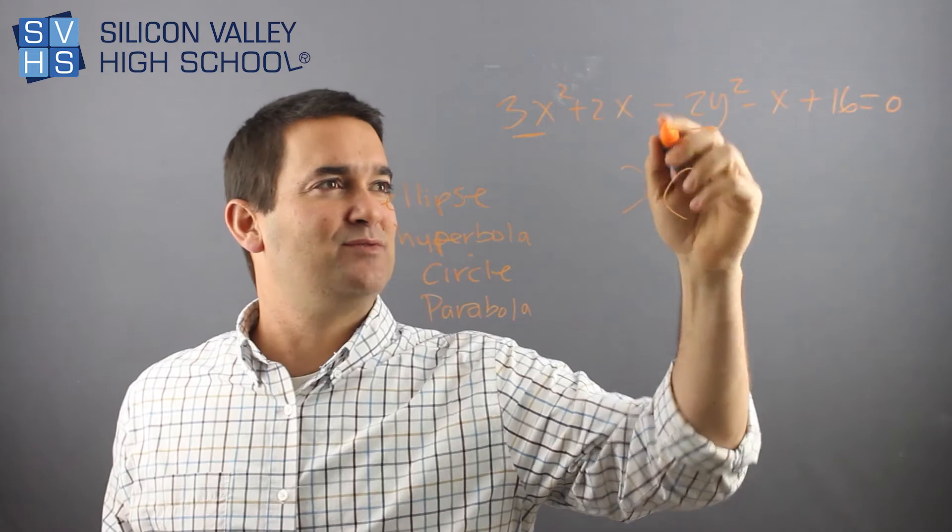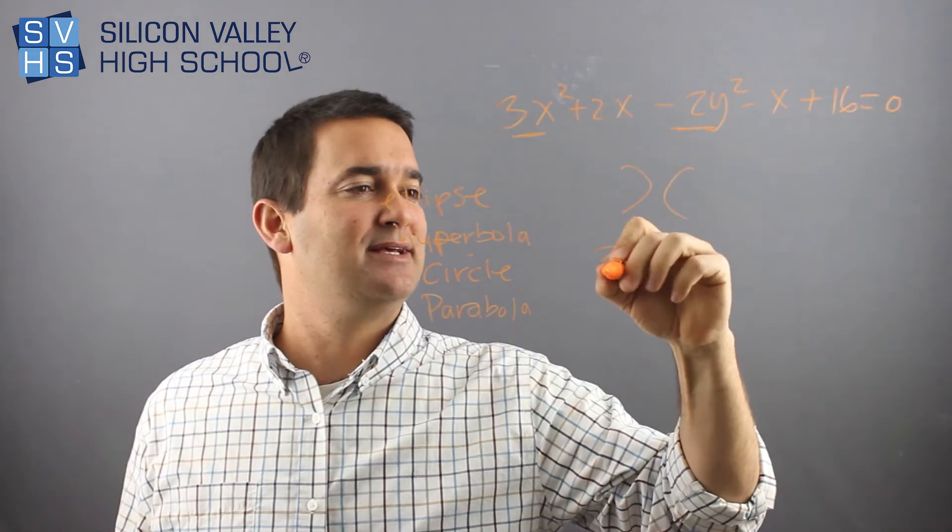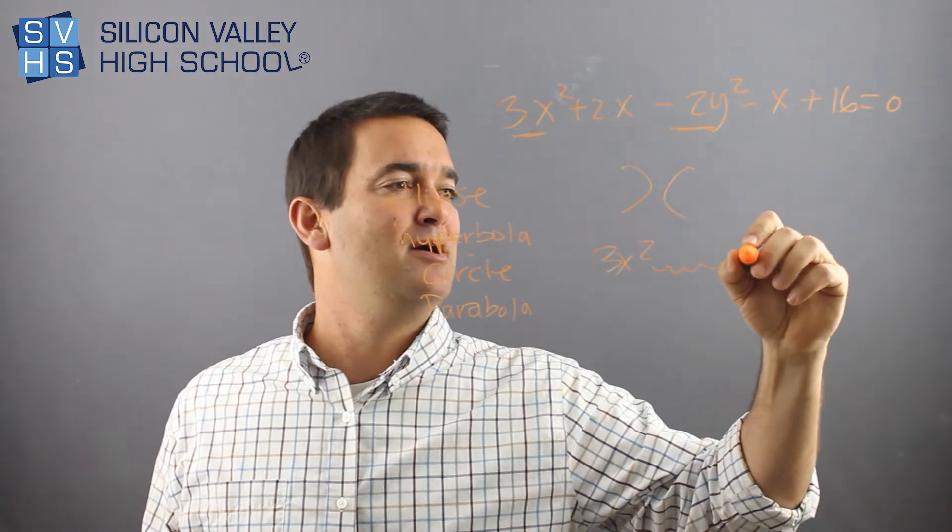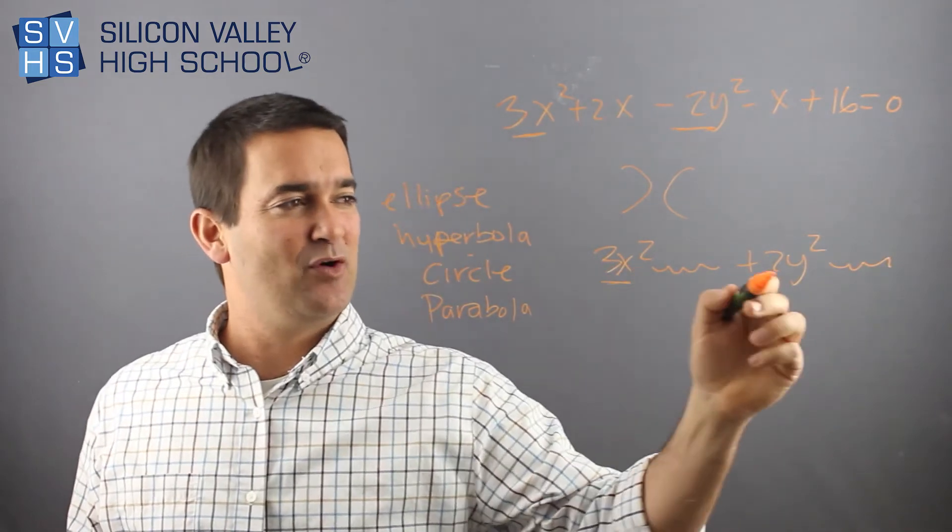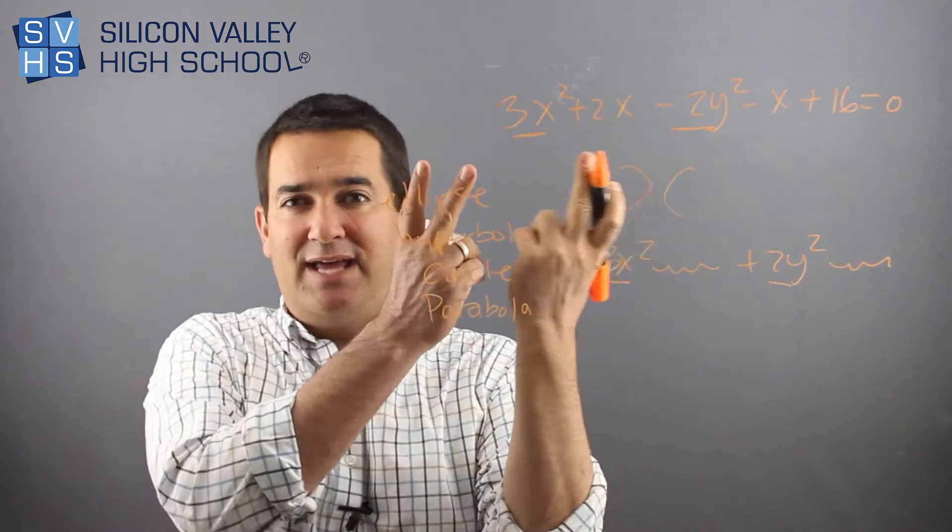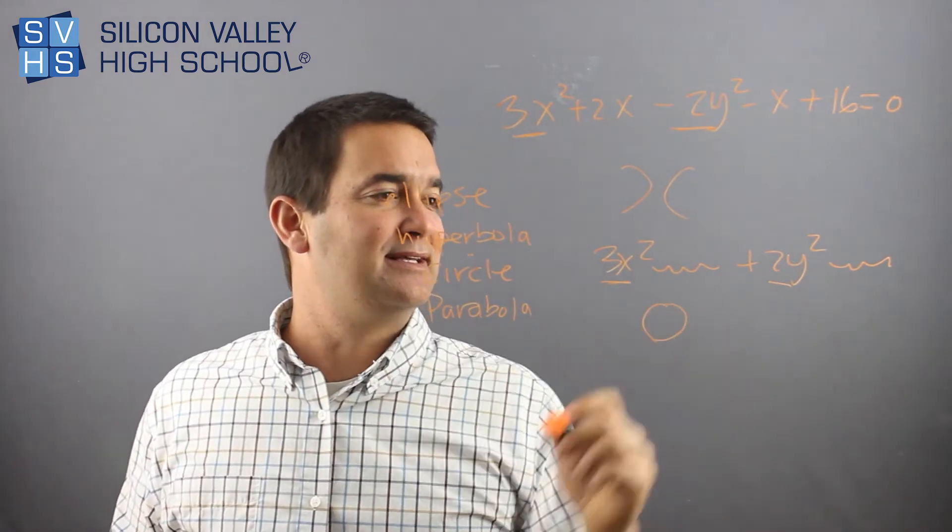But if this was a plus, like if you had another problem like this, 3x squared plus 2y squared. Then you see here, they're both positive. They're being added. You take those halves, and you actually add them, and it would be like this.